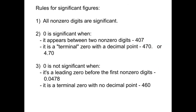So how do we know what digits are significant when reading or reporting a number? There are three simple rules for significant figures. First, all non-zero digits are significant. Then we have to deal with zeros. A zero becomes significant if it's between two non-zero digits. For example, in 4107, the zero is between a 4 and a 7 — between two non-zero digits — so this zero is significant. This number has three significant digits.